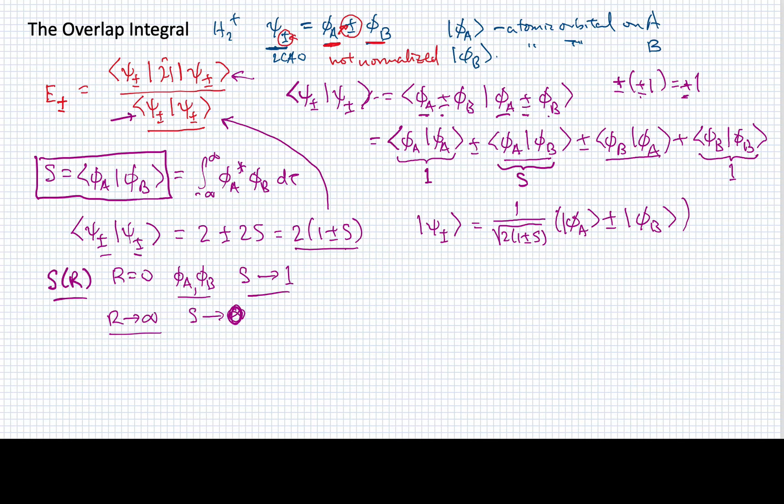This s is something that we know as the overlap integral because it measures the degree of overlap between two functions. Now, it turns out if I use the hydrogen atom example so that I have phi a is equal to a 1s orbital and phi b is 1sb, it turns out we can get an exact expression for s as a function of r, and it looks like this: e to the minus r times the quantity 1 plus r plus 1 third r squared.